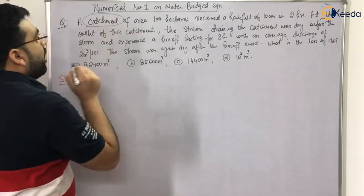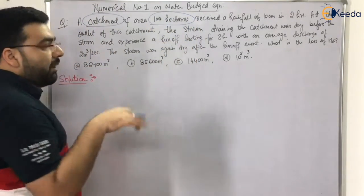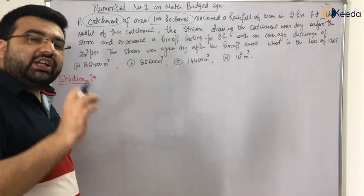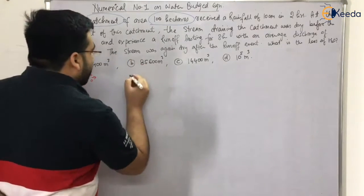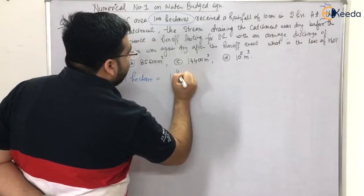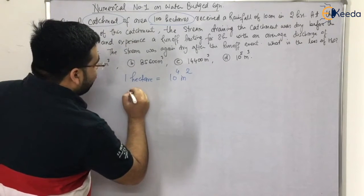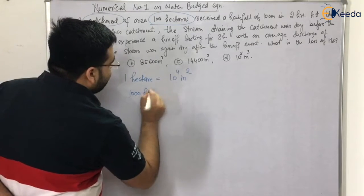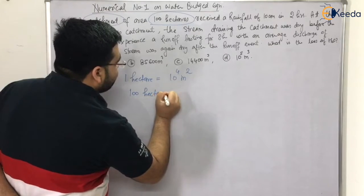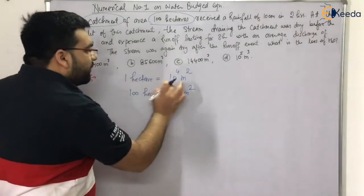The question says: a catchment of area 100 hectares. Let me tell you about hectares and kilometer square — this unit is very frequent in hydrology and irrigation. One hectare is 10⁴ m², and 100 hectares equals one kilometer square.